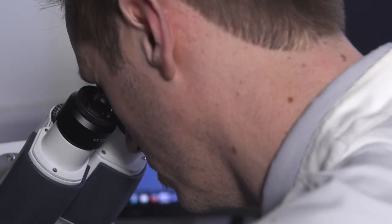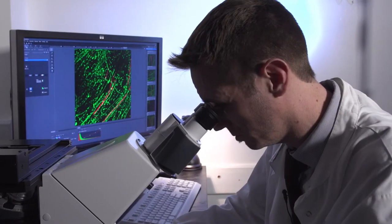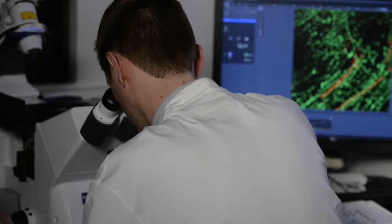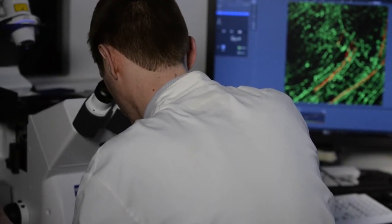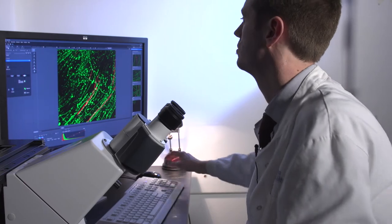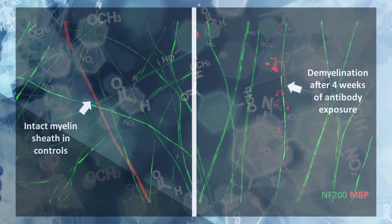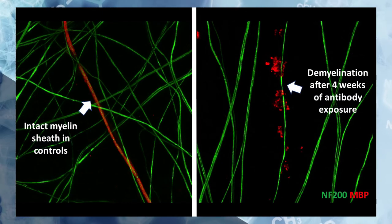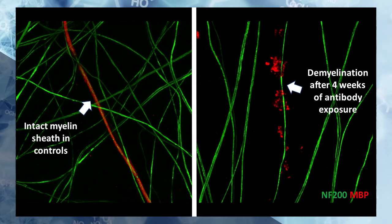The impressive longevity of our cultures allowed us to continuously apply disialosyl antibodies over two four-week periods, both at the onset of myelination and also in established six- to nine-month-old cultures. These experiments revealed that this exposure both prevented myelination and also induced demyelination without affecting axonal integrity.